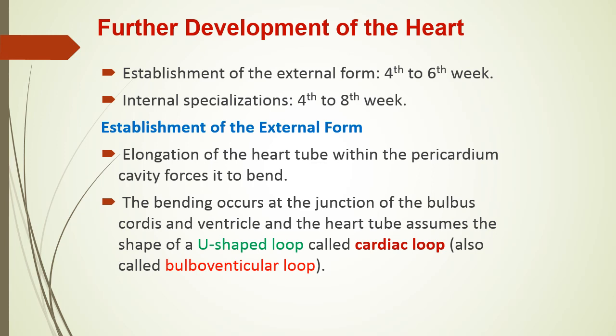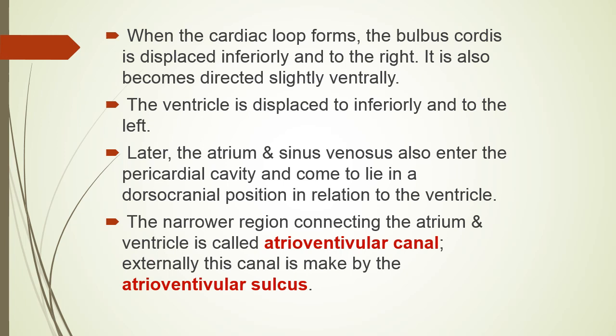When the heart tube elongates, it shows four regions: bulbus cordis, the primitive ventricle, the primitive atrium, and finally the sinus venosus, which is formed by the confluence of six veins. As the heart tube lies within the pericardial cavity and the dorsal mesocardium disappears, the heart tube elongates and enlarges in length, and to accommodate this it compulsorily bends, forming a U-shaped loop called the bulboventricular loop or cardiac loop.